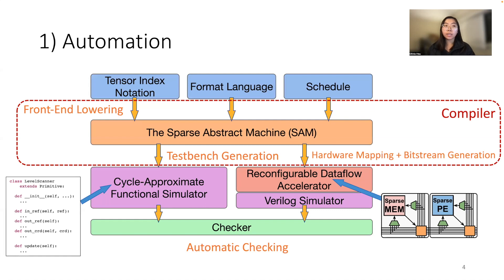And then finally, once the checking infrastructure and verification infrastructure is implemented, we get the automatic checking of our CGRA accelerator to our cycle approximate functional simulator.